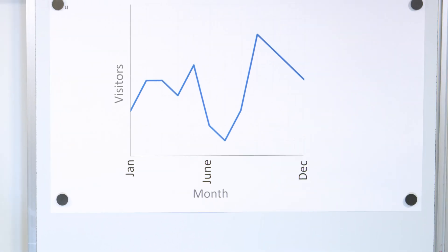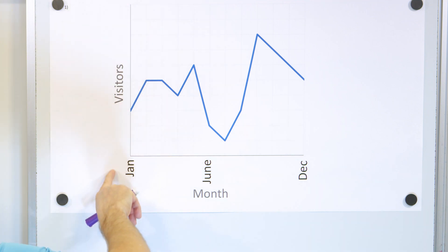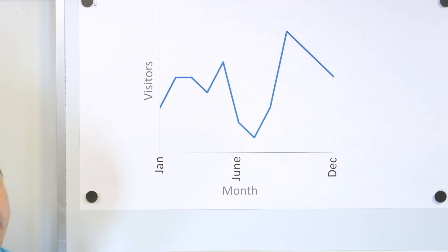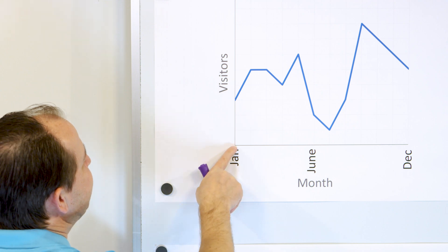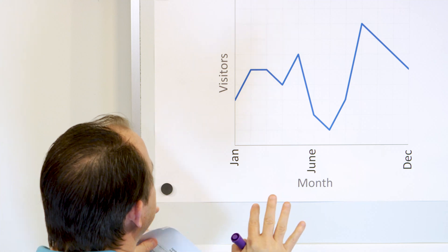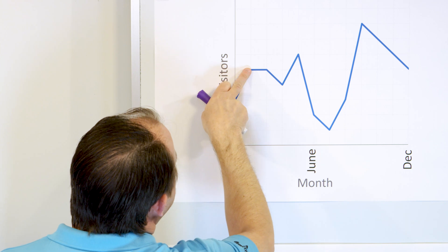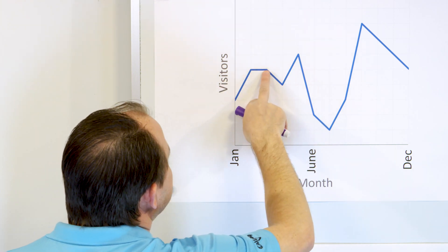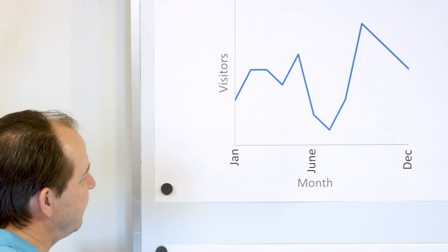So let's take a look at our first little example. Here we have a graph with the months of the year along the x-axis, and on the y-axis we have the number of visitors. Now what we're talking about here is a public library. So it's kind of a relative indication of traffic in a library. In January we start out, February and March are constant, and then April, May, June, and July over the summer are very low in the library because kids are out of school.